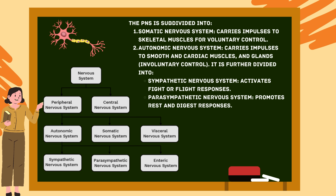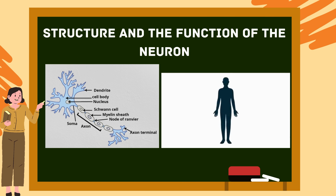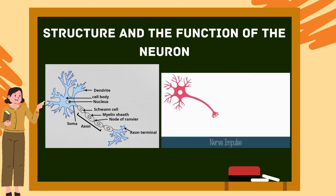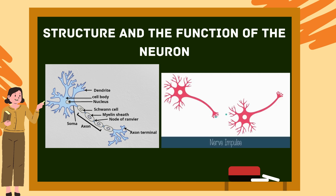Now let's understand the structure and function of the neuron in detail. Your nervous system, which includes your brain, spinal cord, and all of the nerves, uses electrical and chemical messages to allow you to move, smell, see, feel pain, and think. The nervous system is an internal communication system. The main cell of the nervous system is the neuron, which transmits nerve impulses — electrical signals — and then sends chemicals to the next neuron across a very small gap between them.